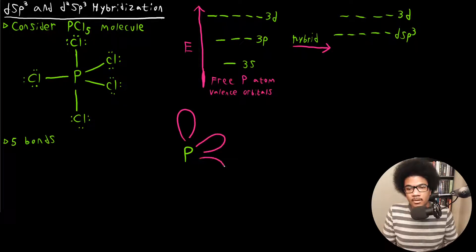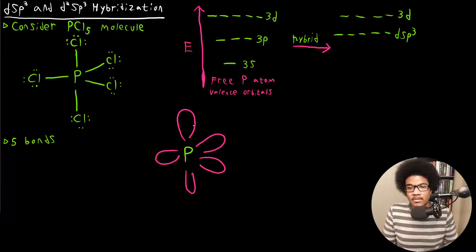So phosphorus is going to be DSP3 hybridized, and each one of those is going to interact with the orbitals on the chlorine.